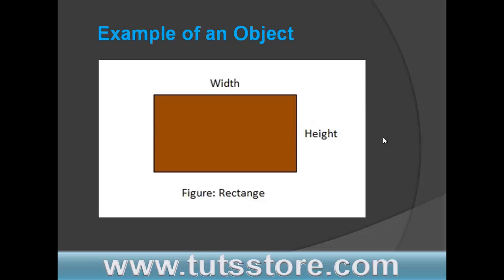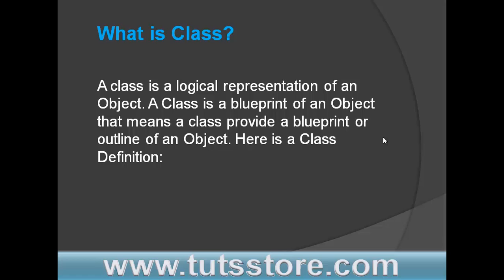Here is an example of an object which is a rectangle, with properties width, height, and fill color. Now, what is a class? A class is a logical representation of an object, or you can say a class is a blueprint of an object — that means a class provides a blueprint or outline of an object.